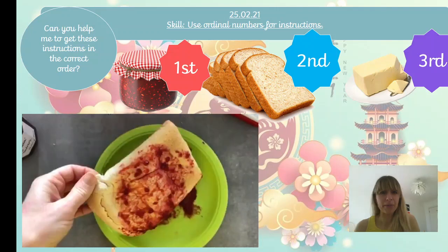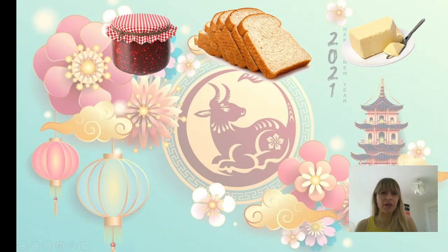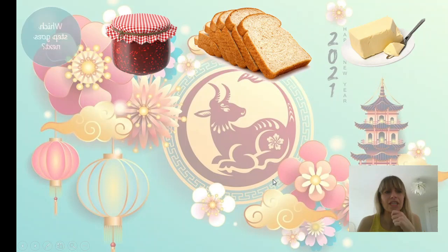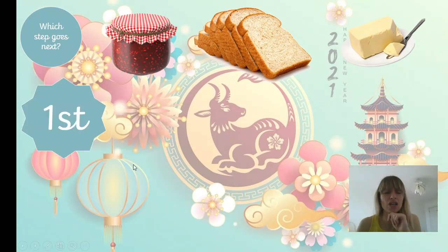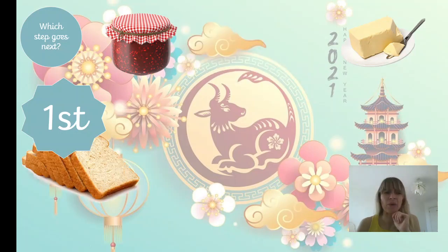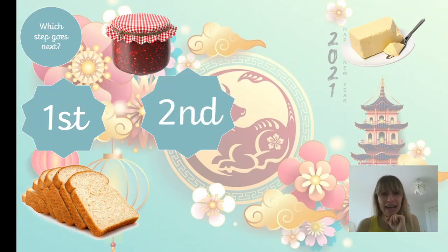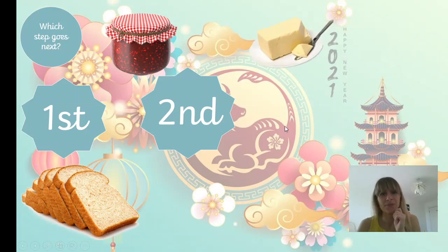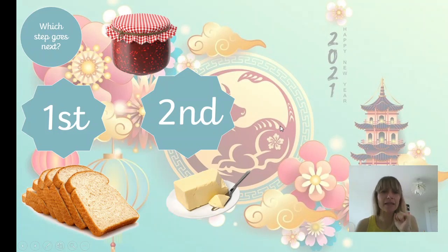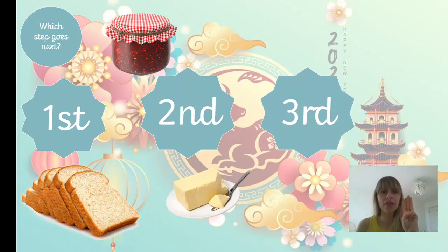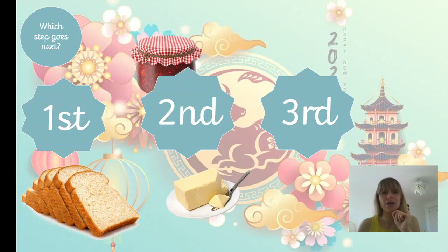I think I'm going to need your help to get this right. Let's see if we can do it together. So we have our ingredients: some jam, some bread, and some spread. Which item do we need to use first? Yeah, I think we'd better put some bread down first. And second, which is going to come next — the jam or the butter? Yeah, let's put the butter second. Butter goes second. Good job. We've had first, we've had second, so our next instruction is third. Well done. So third, we have some jam.